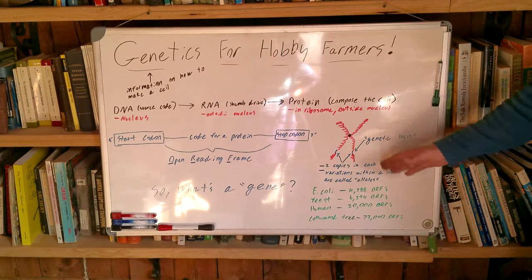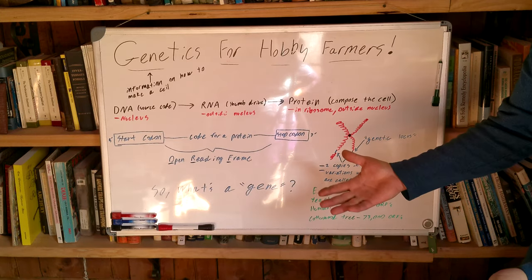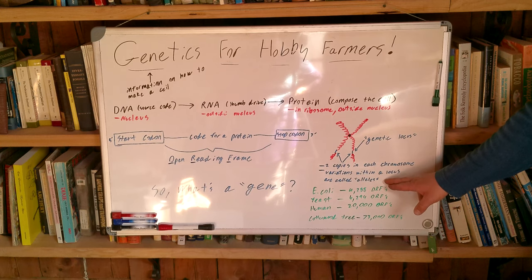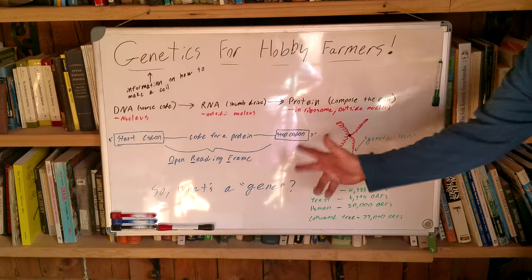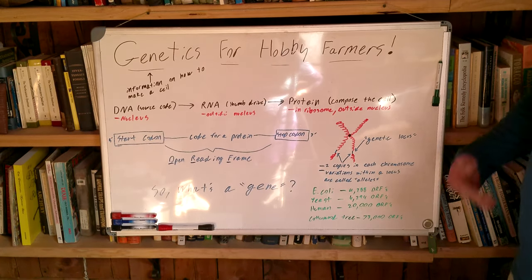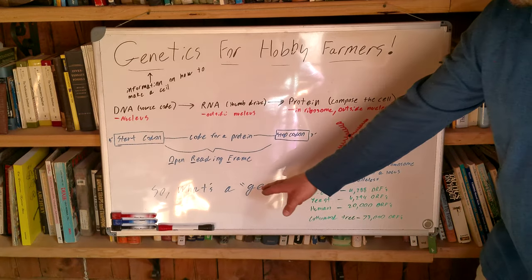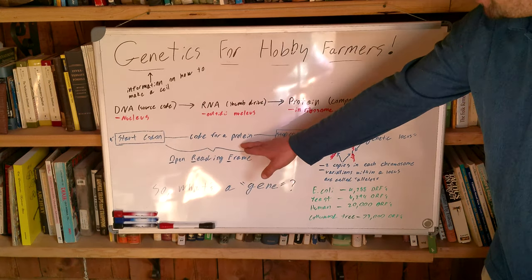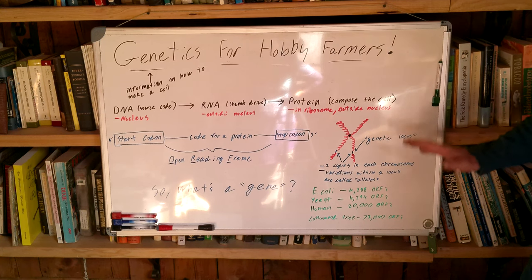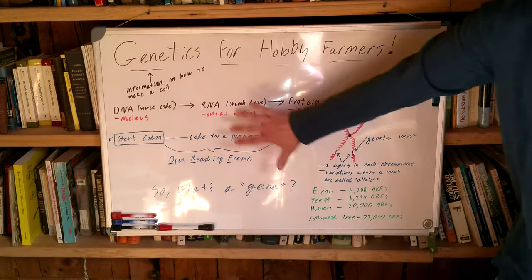Because you have duplicated copies of each open reading frame, you can have variations — you get two copies of every open reading frame, and they can be identical or they can be different. When we have different options within an open reading frame, we call those different alleles. These different alleles are the third thing that people sometimes call genes. Context clues become important when talking with the general public: are we talking a genetic locus, an open reading frame, or two different alleles at the same locus? When I mean allele, I'll say allele; if I say gene, I'll use that more for open reading frame.